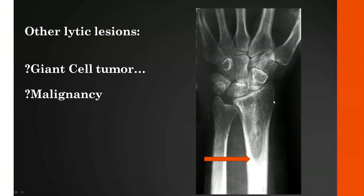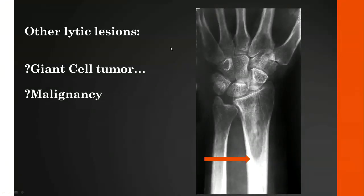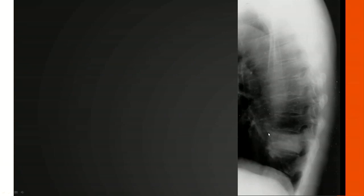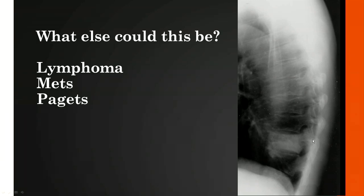Here we have an enlarged ivory vertebra. As we said, this has been described with Paget's disease. The differential diagnosis to keep in mind is lymphoma, metastatic disease, and Paget's disease. You will search for evidence of Paget's disease elsewhere in the skeleton, as well as evidence of lymphoma or metastatic disease elsewhere.